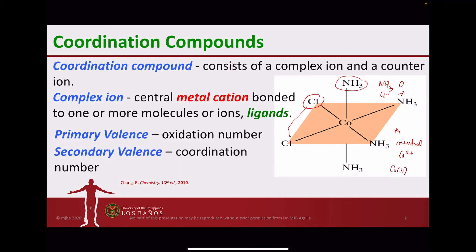The second valence is referred to as the secondary valence, which is the coordination number. The coordination number is the number of groups — either molecules or ions — essentially the number of ligands bonded to the central metal cation. In this case, we have six ligands all bonded to the central cobalt metal ion, so the coordination number, or secondary valence, for cobalt in this complex is six.